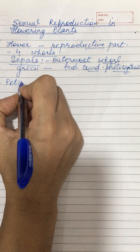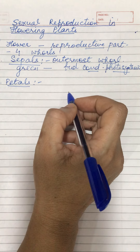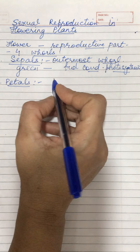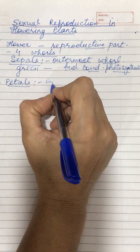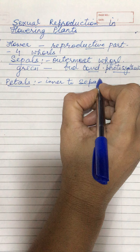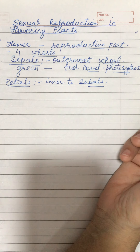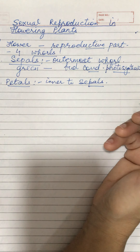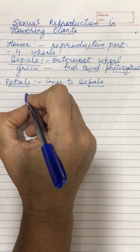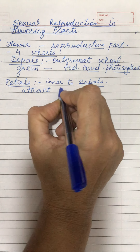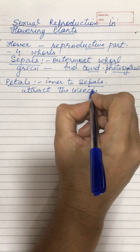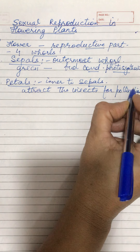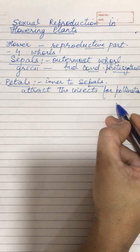Number two is the petals. Petals are brightly colored, showy structures that are inner to the sepals. Flowers are recognized by their petals — like a red rose, that color is all because of the petals. They are brightly colored because they attract insects for pollination.